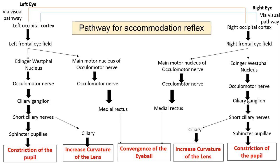The next slide shows the entire sequence of events in a nutshell for the pathway of the Accommodation Reflex. Remember, two cranial nerves are involved: the optic nerve in the visual pathway, and the oculomotor nerve as the efferent limb. So both the optic nerve and third cranial nerve are involved in the Accommodation Reflex. Three muscles are involved: the sphincter pupillae, the ciliary muscle, and the medial rectus.